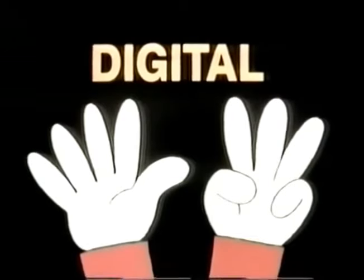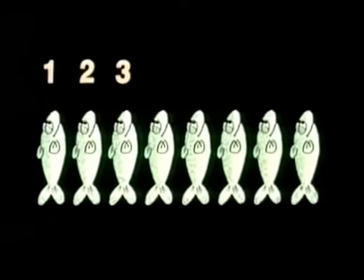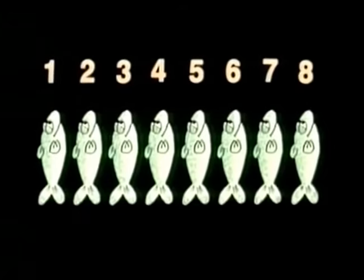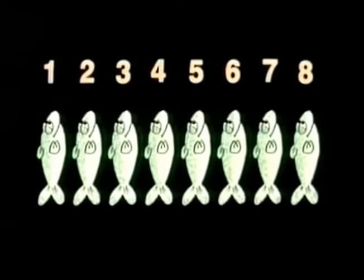He's using separate individual digits to describe separate individual objects, which is fine, because this is a very clear-cut situation. You either catch eight fish or you don't. You can't catch a little less or a little more than eight fish.